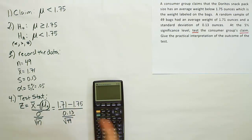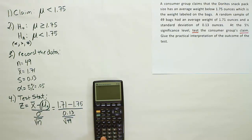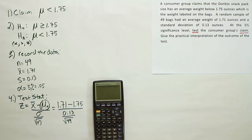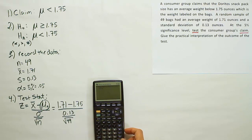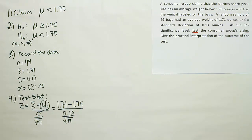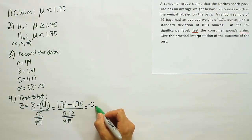Working this out in the calculator: 1.71 minus 1.75 in parentheses at the top, divided by 0.13 — again in parentheses — divided by the square root of 49, which is 7. That gives us the answer negative 2.15. So our test stat is negative 2.15.